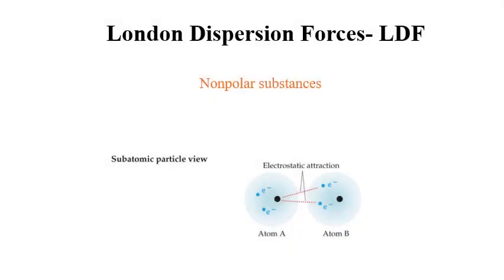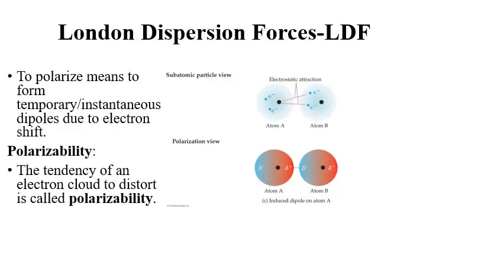So far we were discussing the attraction between polar molecules. What about non-polar molecules? In non-polar molecules, we will have some shift in the electron because electrons are always in random motion. At one time, electrons will move towards one side of the atom and create a temporary or instantaneous dipole. On one side, when the electron clouds move, there will be a slightly negative charge and on the other side a slightly positive charge. That induces another dipole in the neighboring atom, and the positive and negative parts will attract. The tendency of an electron cloud to shift like this we call polarizability.